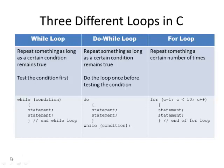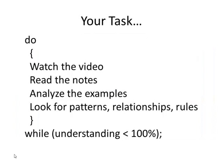If you print out the reference page from the handout, it tells you the three loops, why you would use each one, the difference between while and do-while, and the basic structure of each — including where semicolons go and where they don't. I highly recommend you print this out and keep it in your notes. Your task now is to follow this do-while loop: watch this video, read the notes, analyze the examples, look for patterns, relationships, and rules. If your understanding is less than 100%, go back and do it again. Things build on previous information, so learn it now. Do this as many times as you need until your understanding is 100%. And that's all you need to know about loops — now you're prepared to do your homework and lab prep for this week's activity.